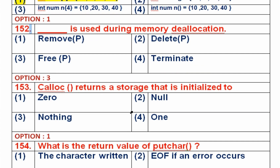Question number 152: Which function is used during memory deallocation? Deallocation means giving back the memory that was allocated to the processor back to the heap. There is only one function in C that performs deallocation, which is free. The three allocation functions are malloc, calloc, and realloc, which allocate memory from the heap to the processor. So option 3, free, is the right answer.